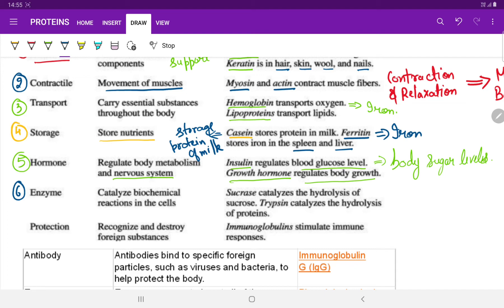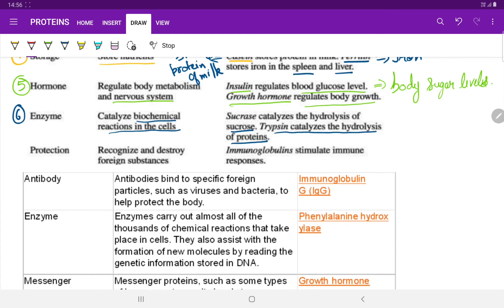The next is enzymes. Enzymes play a vital role in our body, they act as biological catalyst. They help to catalyze the various biochemical reactions in the cells. Sucrose catalyzes the hydrolysis of sucrose, trypsin catalyzes the hydrolysis of proteins. The sucrose enzyme is mainly involved in hydrolysis of sucrose, whereas trypsin helps to catalyze the hydrolysis of proteins. These are all the enzymes that are involved in biochemical functions.